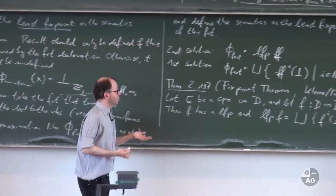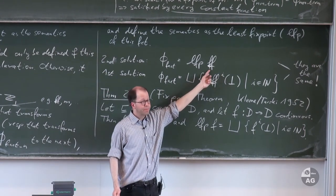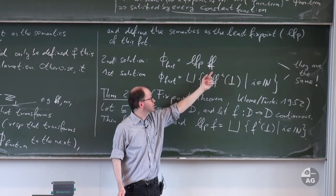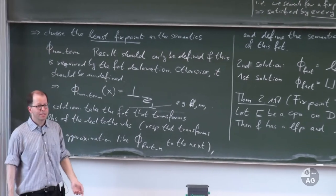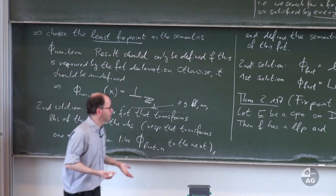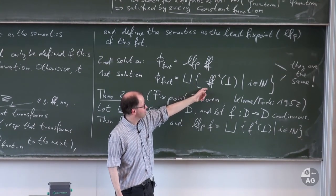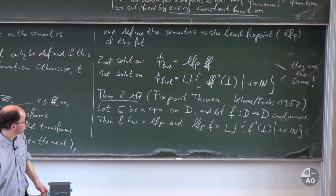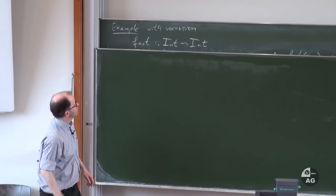In our example, the function FF is continuous because every computable function is continuous, and FF is clearly computable (we can program it in Haskell). Therefore the least fixed point exists and equals the least upper bound of the chain. The proof of this theorem is not difficult, and we will now carry it out.